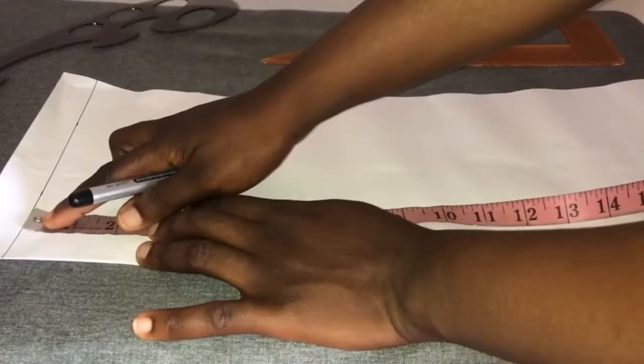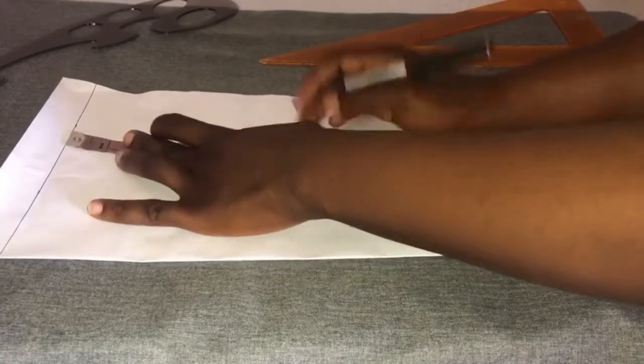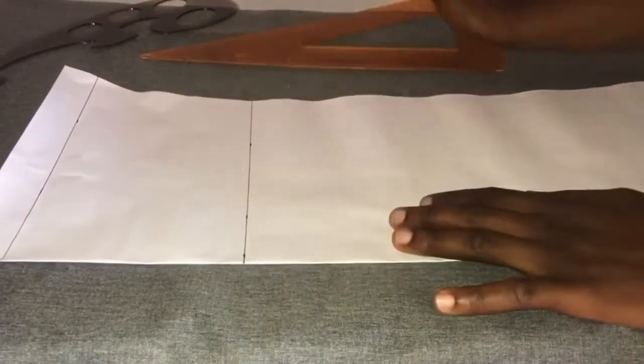From this same line, you measure your bicep. Mine is 5, so I'm marking 5 inches. So you label it.